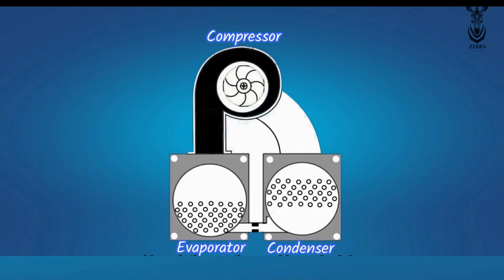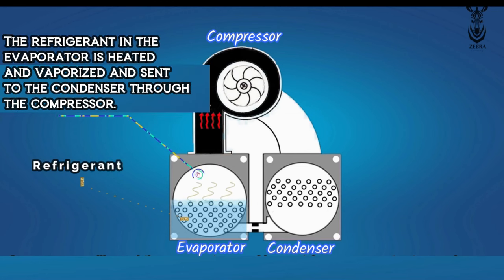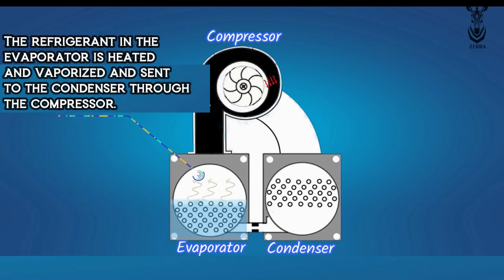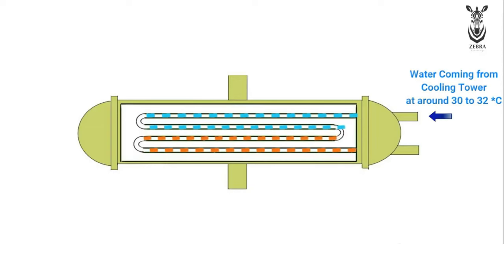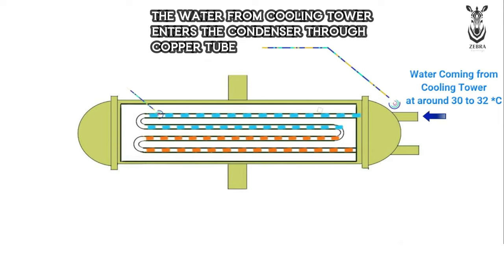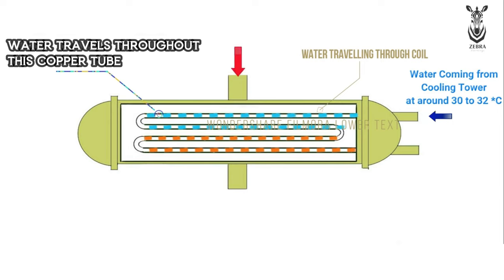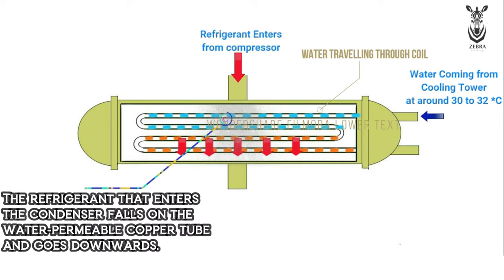Now let's see its working principle. The compressor sends the refrigerant to the condenser from the evaporator, which is in the vapor phase. The water coming from the cooling tower enters the condenser at 32 degrees Celsius through the copper tubes. This water travels throughout the tube. In the condenser, the refrigerant travels around the copper coils.